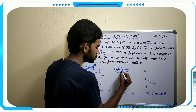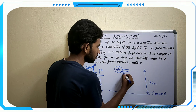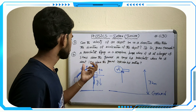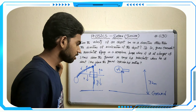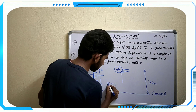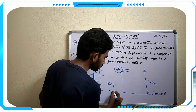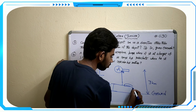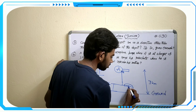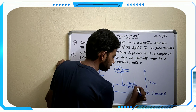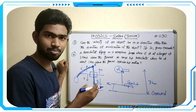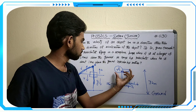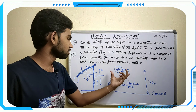He opens his parachute when he is about one kilometer above the ground. A person in the airplane jumps out, and he opens his parachute at about one kilometer from the ground — here he opens his parachute, which is shown in the diagram.